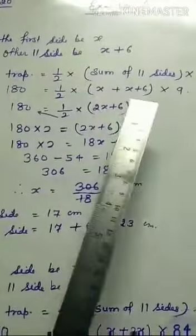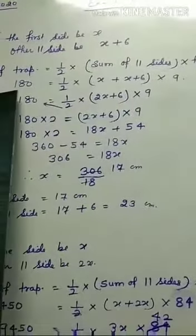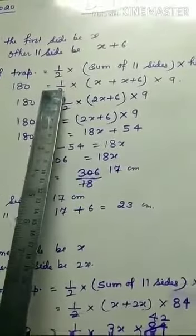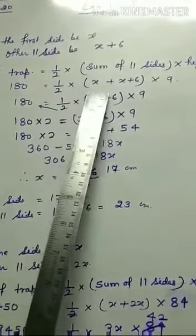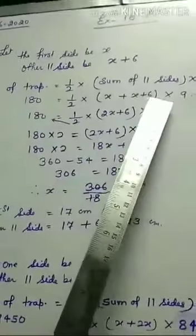The area of a trapezoid is 1/2 times the sum of the parallel sides times height. So 180 equals 1/2 times (x + x + 6) times 9.